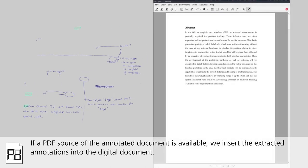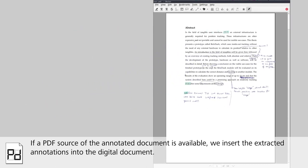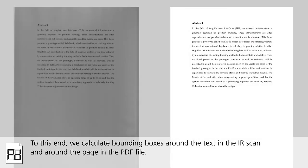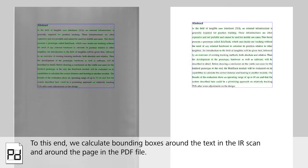If a PDF source of the annotated document is available, we insert the extracted annotations into the digital document. To this end, we calculate bounding boxes around the text in the IR scan and around the page in the PDF file. These are then aligned using a perspective transformation.